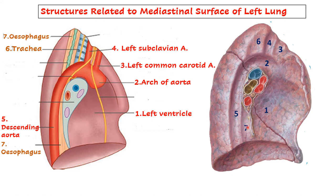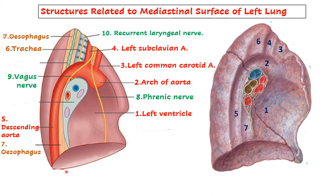This impression is for esophagus. Now the three nerves: the phrenic nerve drawn in front, then the vagus nerve going behind the hilum, and the last important nerve - the recurrent laryngeal nerve - which curves around the arch of aorta and ascends up to supply the larynx. One more important structure: the thoracic duct, which has a beaded appearance on the left side of the esophagus. This is a very important structure that comes in relation to the mediastinal surface of the left lung.